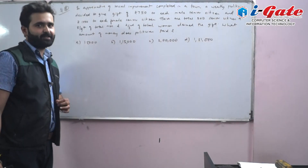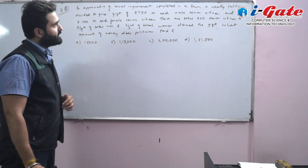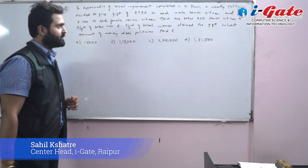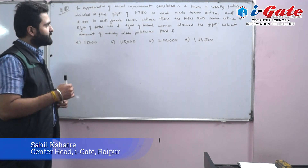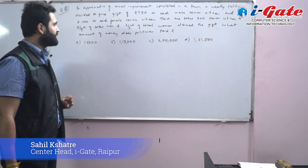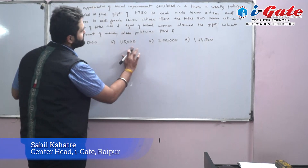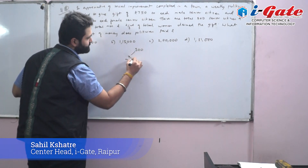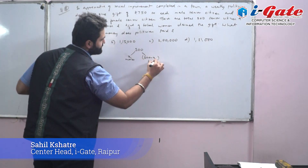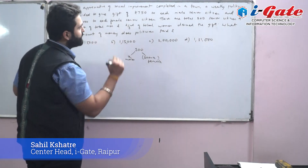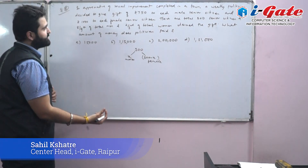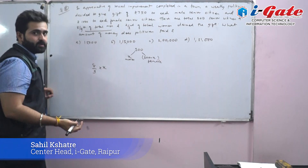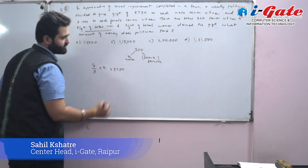Question 8: A politician gives ₹750 to each male senior citizen and ₹1000 to each female senior citizen. There are 300 senior citizens total. 8/9 of total men and 2/3 of total women claimed the gift. How much did the politician pay? Let males = x, so females = 300 − x.